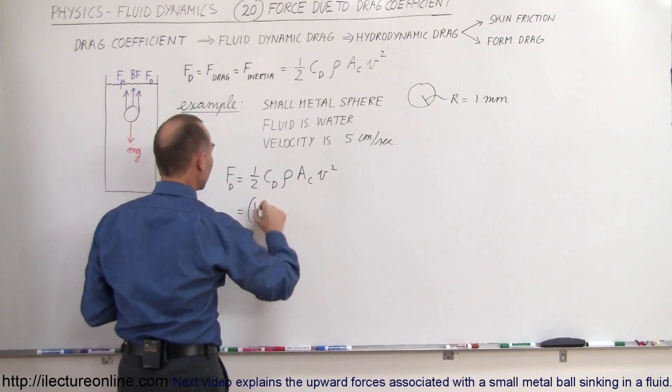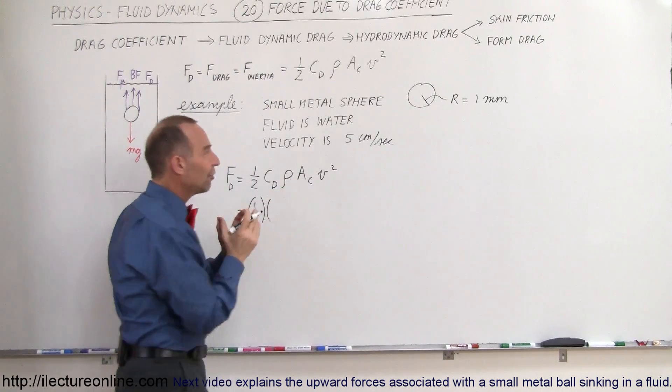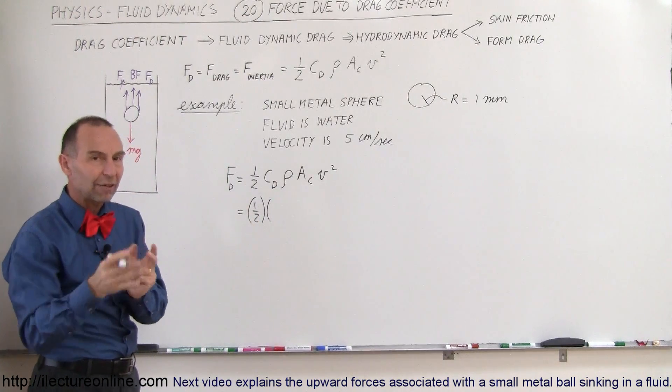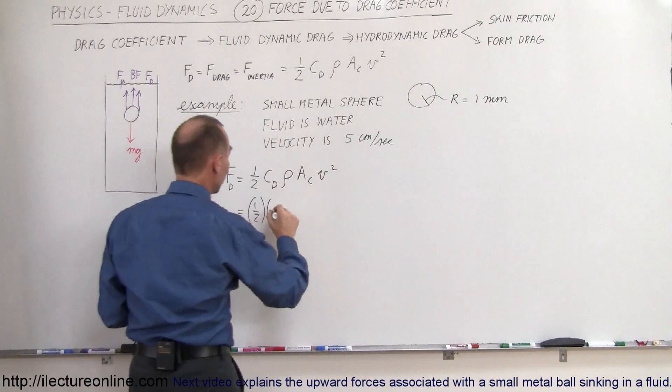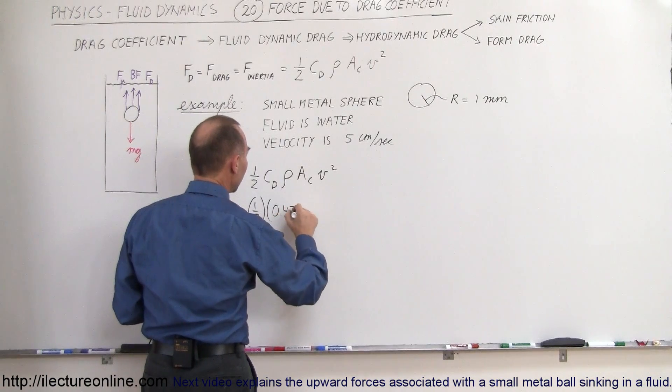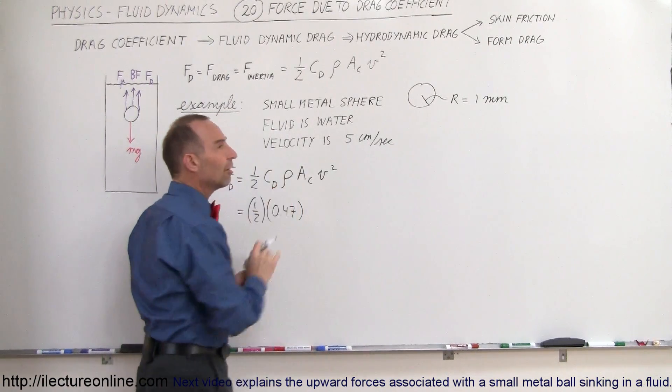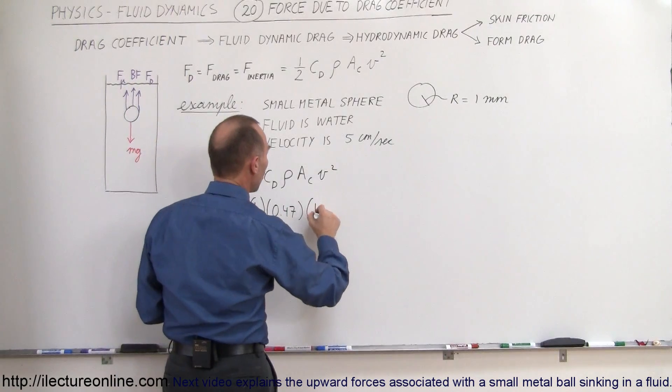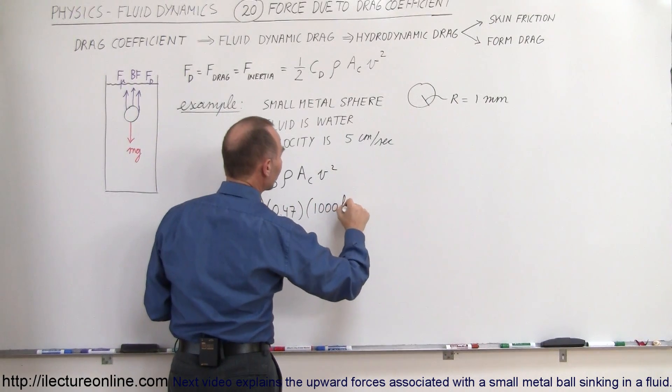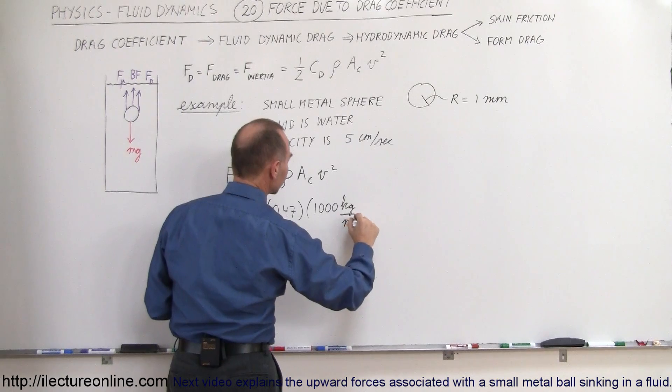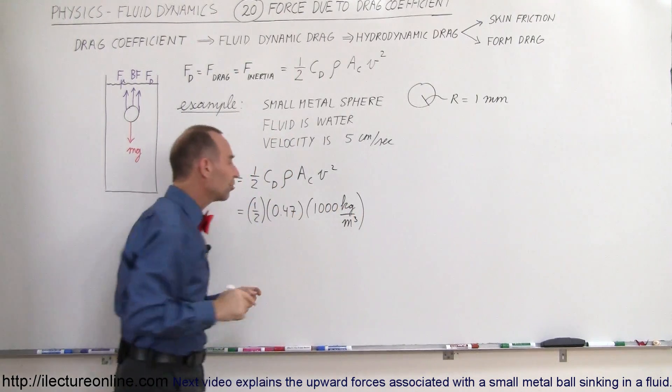So this is equal to one half times, for a sphere the drag coefficient is 0.47, as you could see in the previous video. So it's 0.47, it has no units. The density of water is equal to 1,000 kilograms per cubic meter.